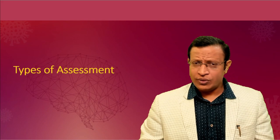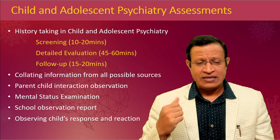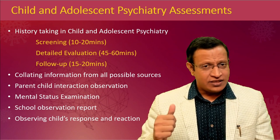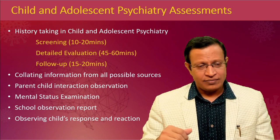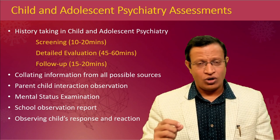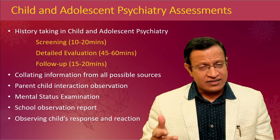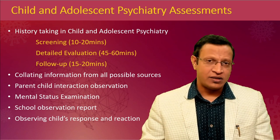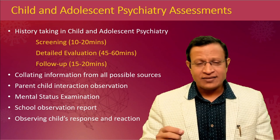Types of assessment in Child and Adolescent Psychiatry: there are three types — screening, detailed evaluation, and follow-up. Screening takes 10 to 20 minutes; I have made a video available on my channel. Detailed evaluation takes 45 to 60 minutes. Follow-up takes 10 to 20 minutes. The whole assessment relies on collating information from multiple resources, observing parent-child interaction, mental status examination of the child, school observation reports, and observing the child's response and reaction to various environmental stimuli. The entire assessment, diagnosis, and management relies on the clinical skill of the psychiatrist.